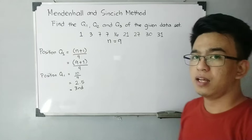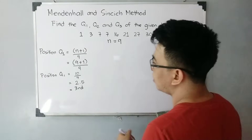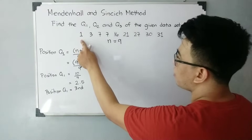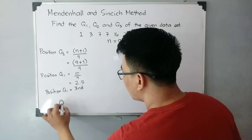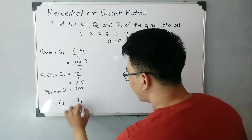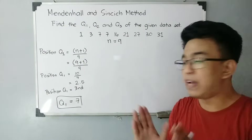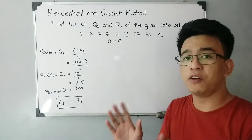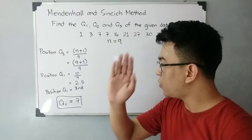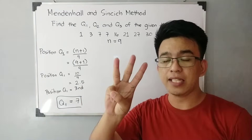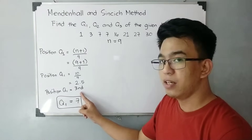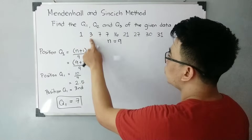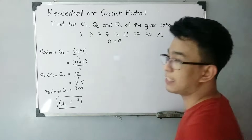The position of quartile 1 is 3rd. Counting through the dataset: 1st is 1, 2nd is 3, and 3rd is 7. Therefore, your quartile 1, or first quartile, is 7. To clarify: the position we calculated was 2.5, and since it is a decimal falling between two integers, we round up to 3. The 3rd data value in the dataset is 7.